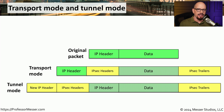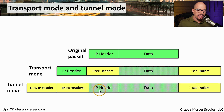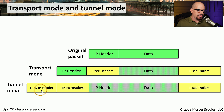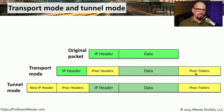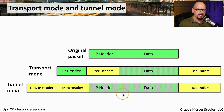A much more secure method is tunnel mode. In tunnel mode, the original IP header and data are all encrypted, so even if you capture this data, you'll never know what the original destination is. Tunnel mode adds a new IP header — which includes the destination of the IPSEC concentrator — along with the same IPSEC headers and IPSEC trailers seen in transport mode. It's not surprising that most implementations of IPSEC use tunnel mode to ensure the highest level of encryption of your original data.